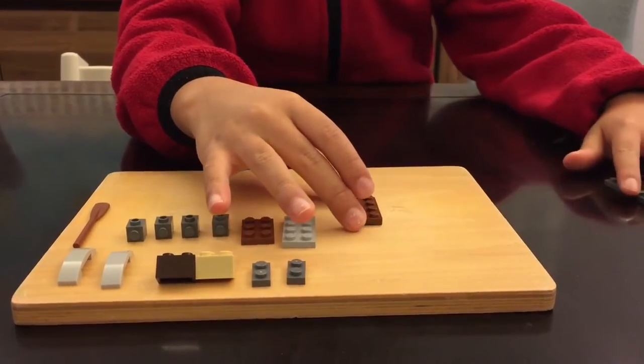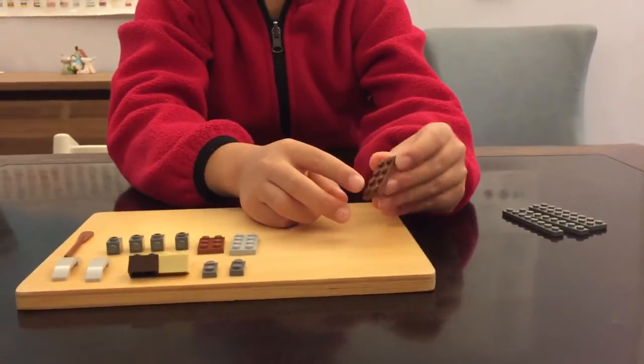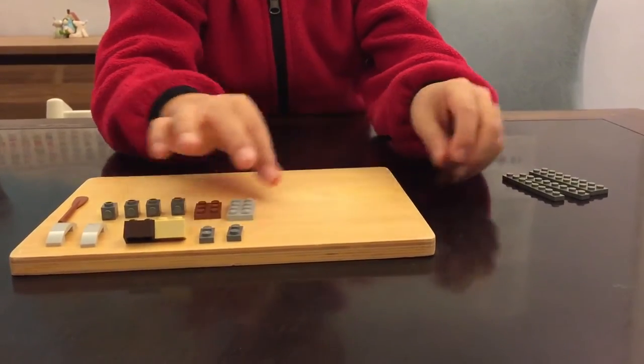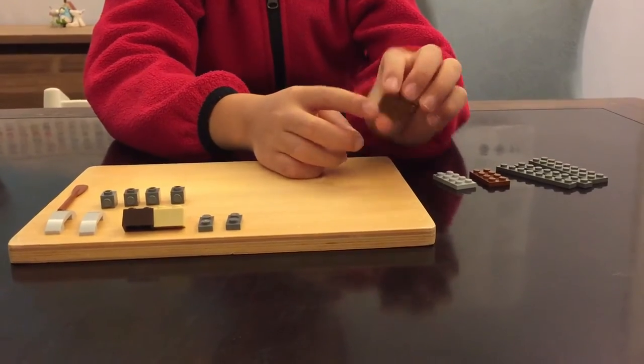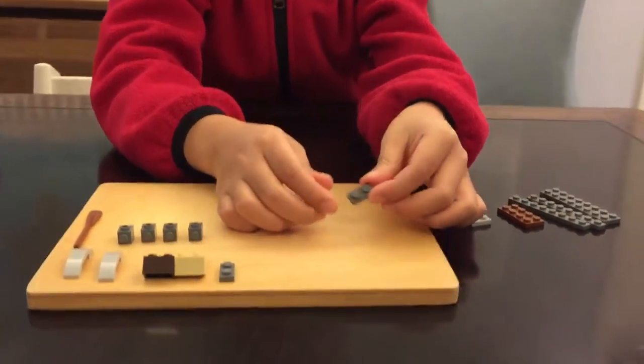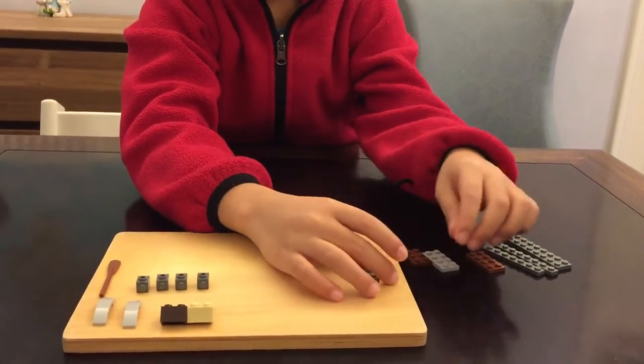Then you'll need two of these 8-studded blocks in a rectangle shape and one of these 6-studded blocks. And then you'll need two of these ones. They have 2 studs on them.